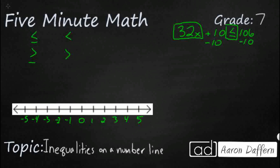I'm keeping this picture of a balance in my mind — something we learned all the way back in first grade — that equations, or in this case inequalities, are kind of like balances. As long as you do the same thing on both sides, you keep a balanced inequality. So if we do plus 10 minus 10, that cancels out. We've got 32x less than or equal to 106 minus 10, which is 96. So 32x is less than or equal to 96.